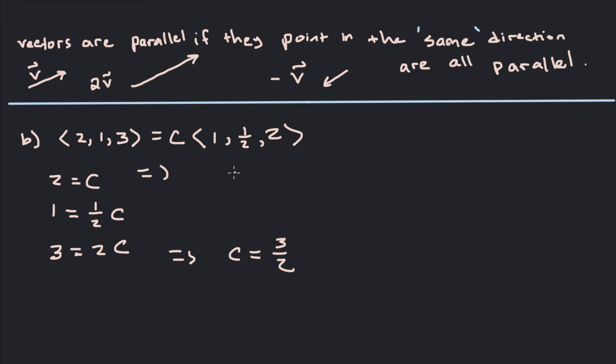The first one tells us that C equals 2, and the second one tells us that C equals 2. So no, not parallel because the C is not the same in each case. So there is no constant that can multiply this vector to give me this vector. So these would be vectors that point in somewhat opposite directions. These are not parallel.